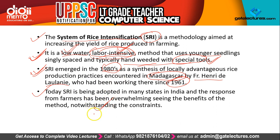In India, since the population is large, a labor-intensive method is not a problem because the cost is less and its benefits are more than the cost. So SRI method is popular in India and it is related to rice cultivation.